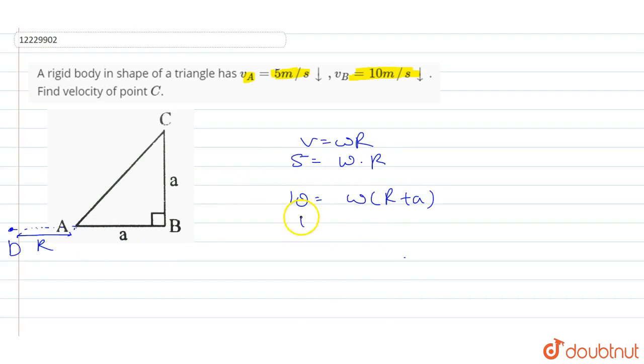So here we have omega R. Omega R value of 5 is given. So 5 plus omega a equals 10, which means omega a equals 5. So we have omega value of 5 by a.